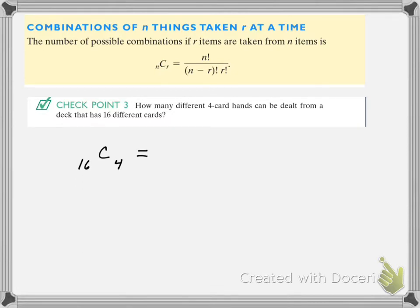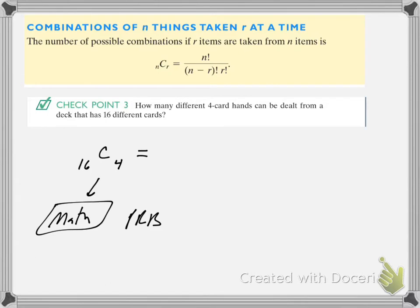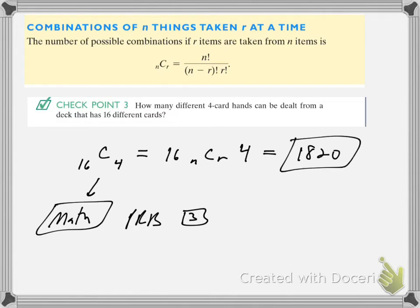It's under the math menu. Hit math, scroll over to probability (PRB) — it's one of the tabs across the top — and select number three, nCr. Put in 16 first, then hit math, scroll to probability, down to nCr number three, then put in 4. I get 1,820 different four-card hands, where order does not matter.